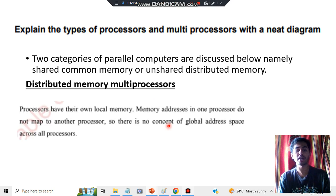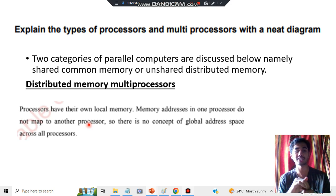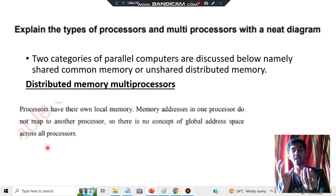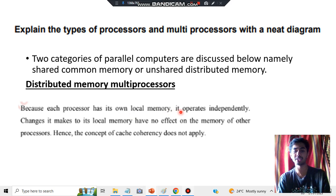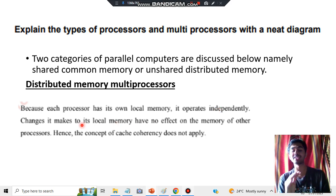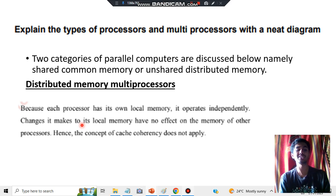All processors are interconnected using bus technology. If the memory address in one processor does not map to another processor, they are independent of each other. There is no mapping — no concept of a global space — so every processor has its own independent memory. For each processor there is a single local memory, and changes made in that local memory are not visible across other memory spaces because there is no global space.